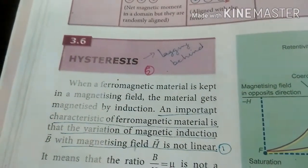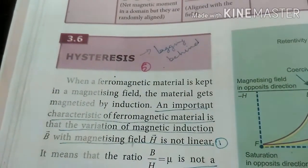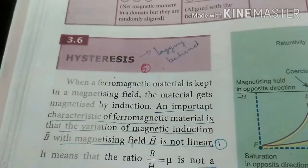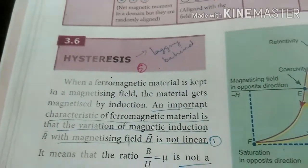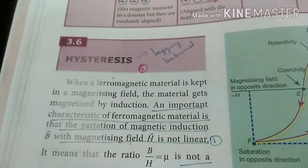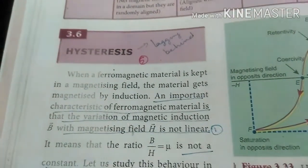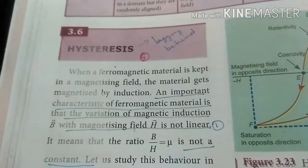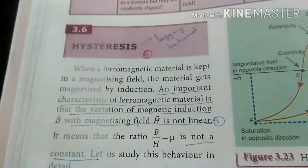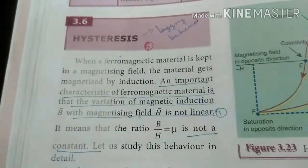So when H increases, B also increases. It means the ratio B by H, which equals mu, is not a constant. So now we are going to study this behavior in detail.